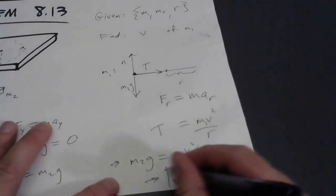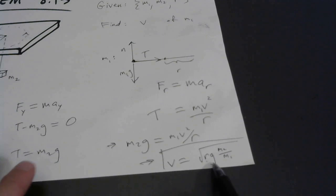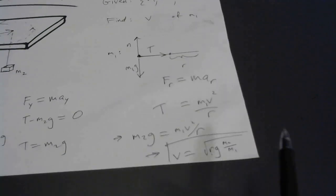Setting the two expressions equal: M2·g = M1·v² / R. They didn't give us numbers, so we solve algebraically and get this somewhat interesting result: v = √(R·g · m2/m1). That square root of Rg keeps coming up — it comes up often in this chapter. If you're doing a circular motion problem and you see √(Rg), give yourself a little pat on the back.